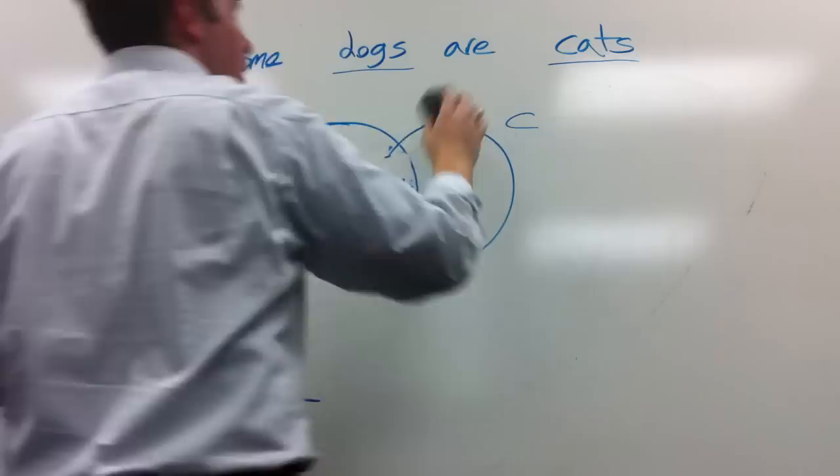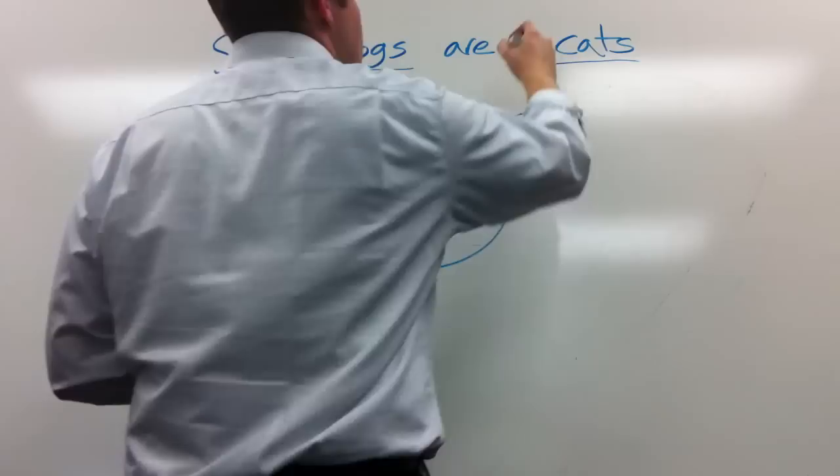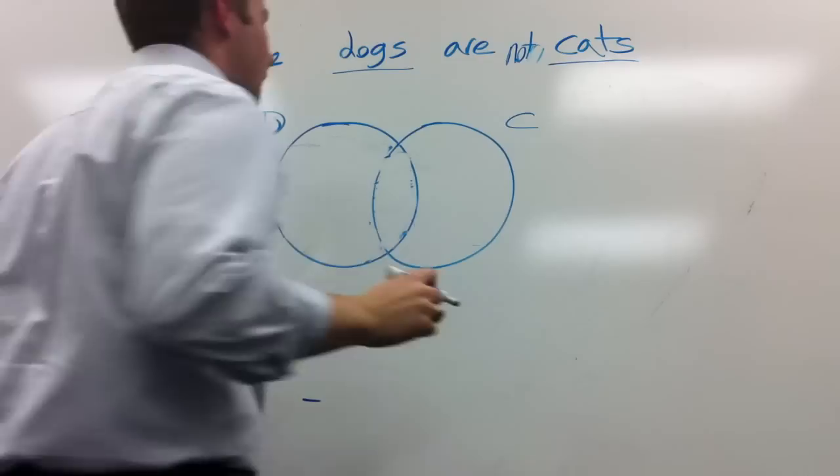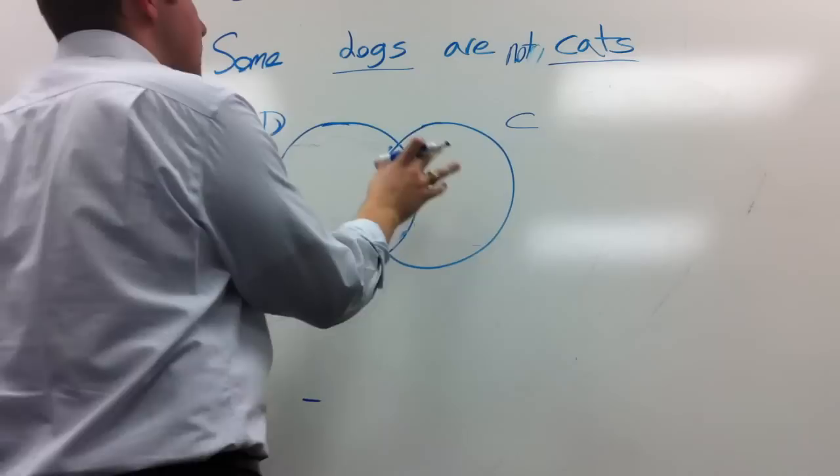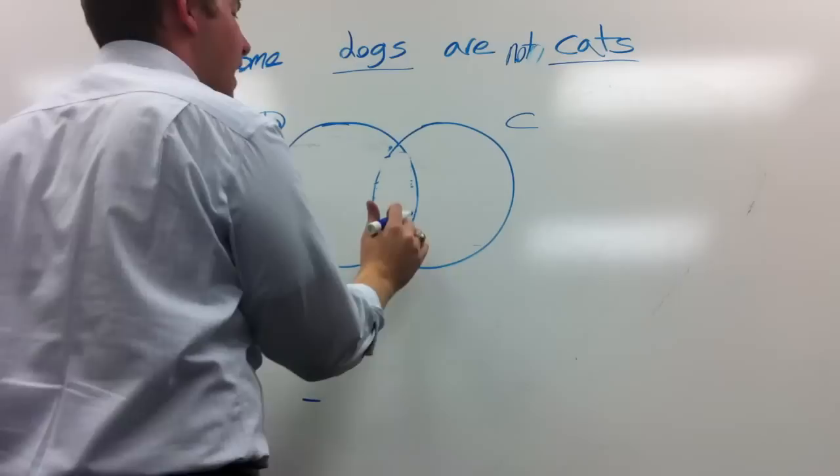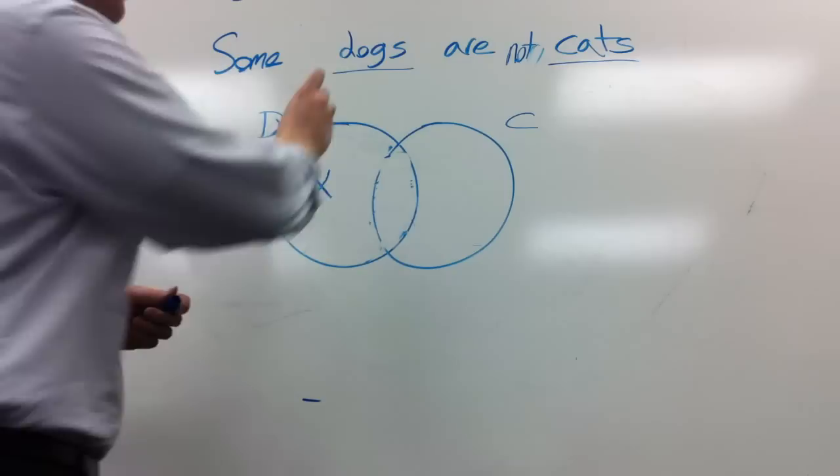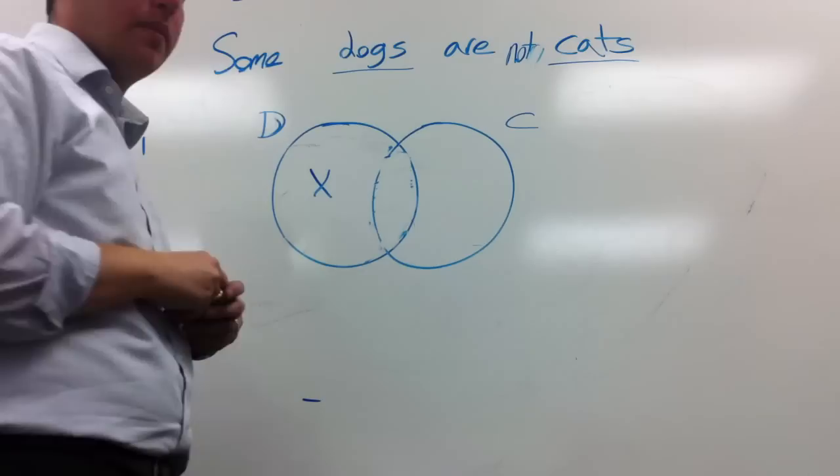And then finally for O statements, some dogs are not cats. Some dogs are not cats. Again, particulars so we use an X. Where do we put it? We're trying to say that there's some dogs, there's something in the dog circle that's not a cat. So we put an X in the subject, where it doesn't overlap with the predicate for O statements every single time.